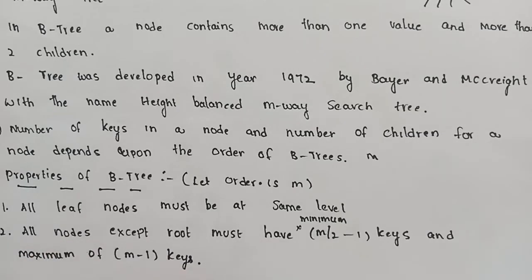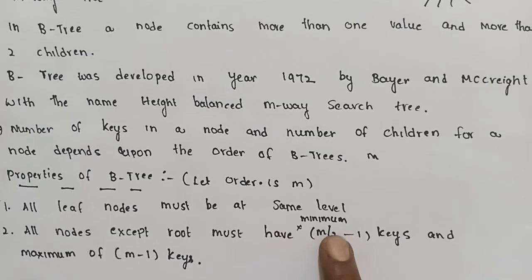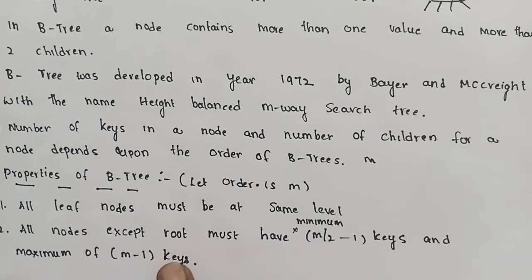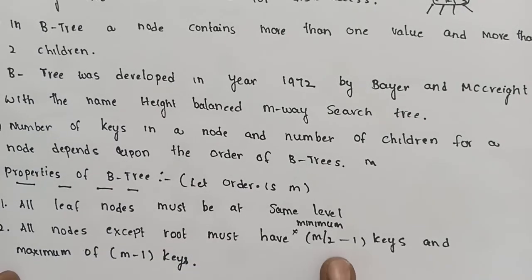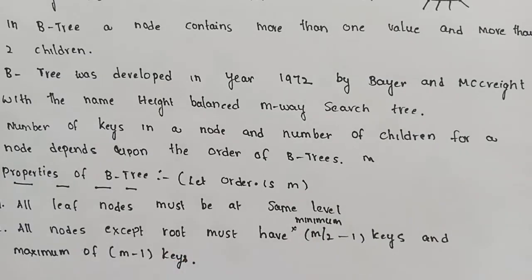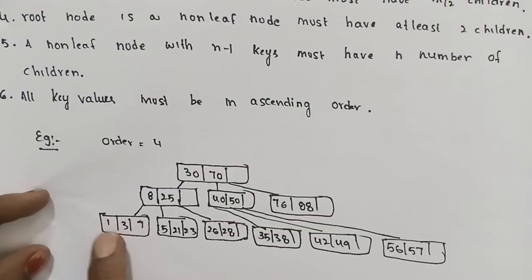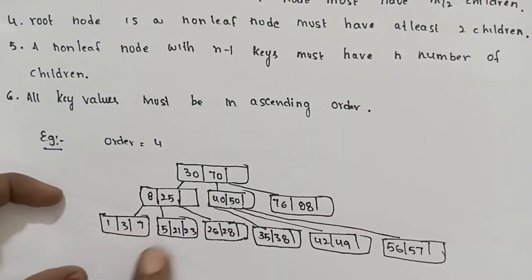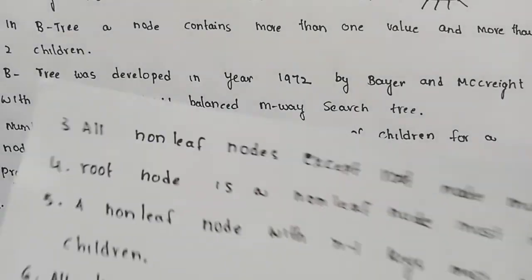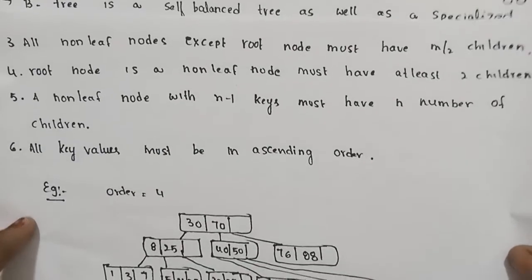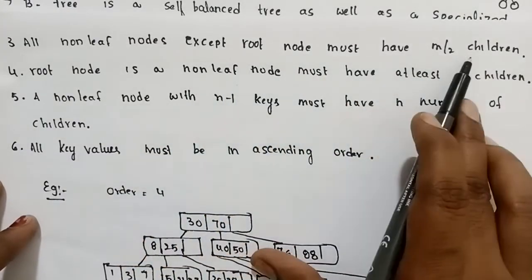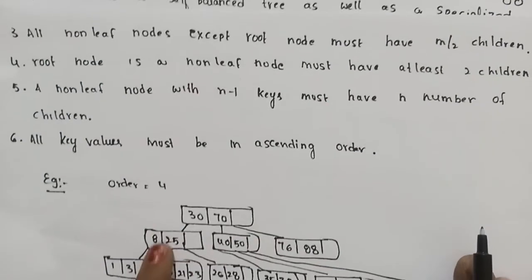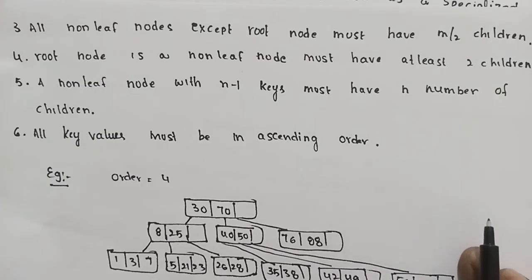The second property: all nodes except the root must have a minimum of ⌈m/2⌉ - 1 keys and a maximum of m - 1 keys. For the root node, the remaining internal nodes have a minimum of ⌈m/2⌉ - 1 keys and a maximum of m - 1 keys. All nodes except the root must also have at least ⌈m/2⌉ children.